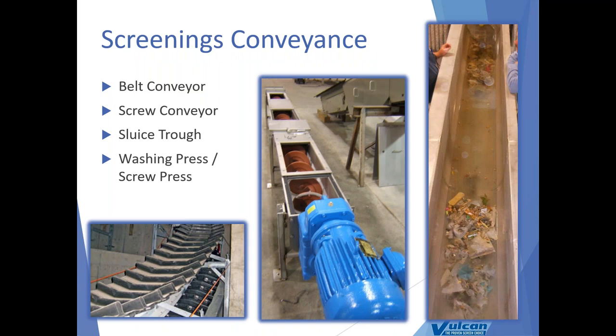We'll wrap up with screenings conveyance and treatment. The screenings have to get from the screen to wherever they'll be disposed. Conveyance options include belt conveyor, screw conveyor, and sluice trough — the most uncommon of the three, which uses a U-shaped trough with water flowing downhill to convey screenings. Lastly, there's the use of a washing press or screw press — where we'll spend a bit of time.